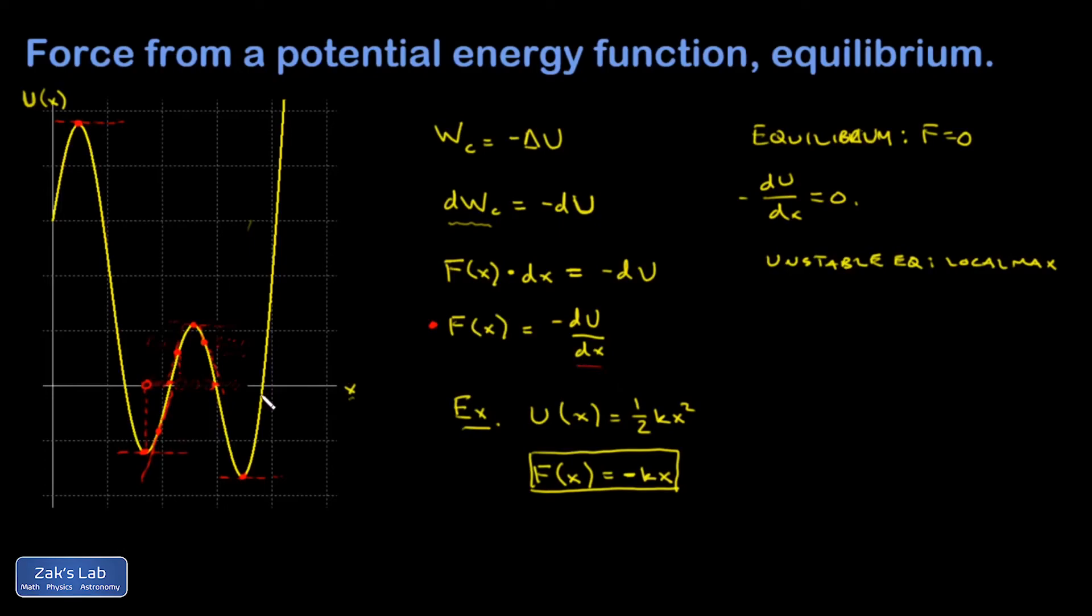Plugging in a positive number for the derivative of the potential energy function gives me a negative F. So if I visualize the particle displaced to the right of the equilibrium point, the force points back to the left. Similarly, just to the left of the equilibrium point, the slope of the potential energy graph is negative, making the force positive. So the force points back toward the equilibrium position.